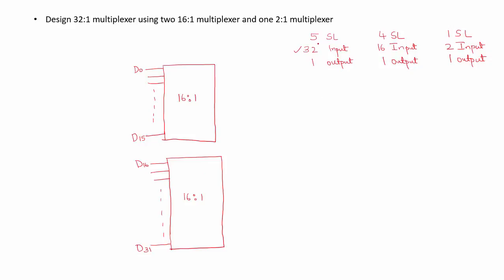Now we need 5 select lines. Out of these, 4 select lines can be obtained from the 16-to-1 multiplexers: S3, S2, S1, S0 connected to the first MUX and S3, S2, S1, S0 connected to the second MUX. Let us connect these select lines together.